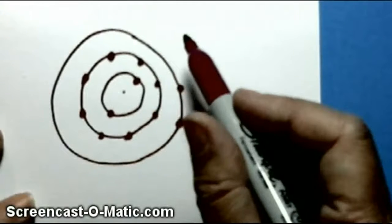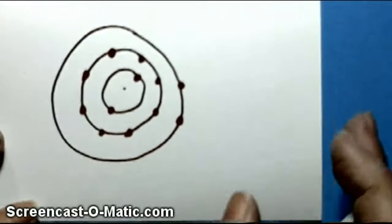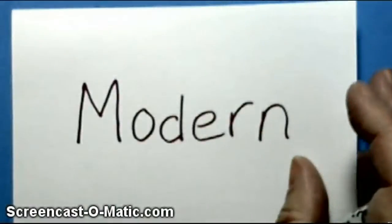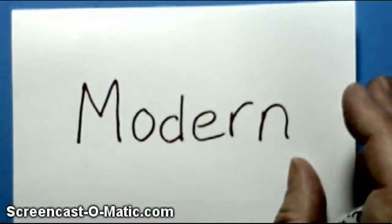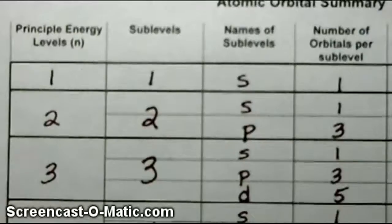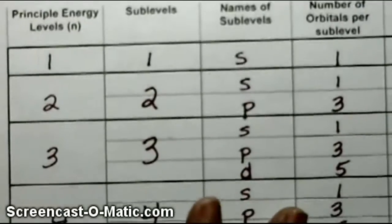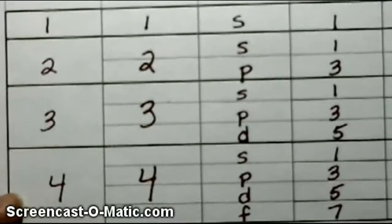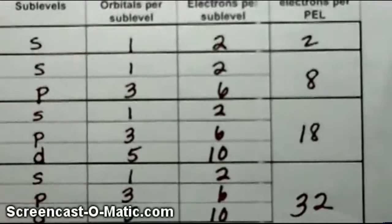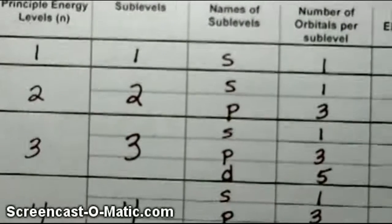We did talk about electrons being able to move, but that was when they were excited. So these are all ground state atoms that we're going to draw now. We learned that the modern atom was a lot more complicated than that. Bohr had energy levels — first, second, third, fourth — with two, eight, 18, and 32 electrons in those levels. But it gets a lot more complicated than that.